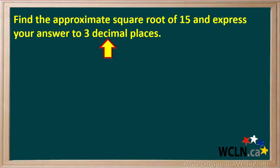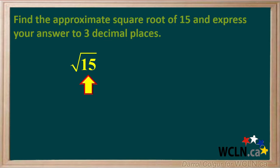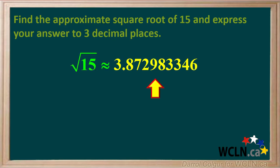For example, let's say you're asked to find the square root of 15 and express your answer to three decimal places. Using a calculator gives you 3.872983346. Notice we have an approximately equal sign here rather than an equal sign — we know that the value displayed is only an approximation. To round to three decimal places, you cut it off right after the 2, which is in the third decimal place.